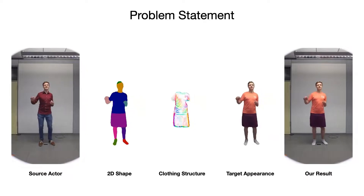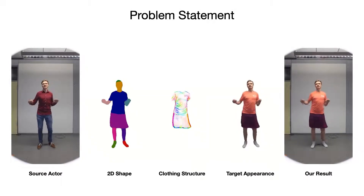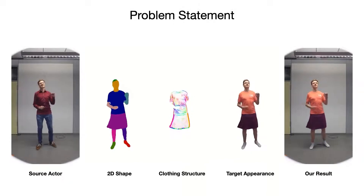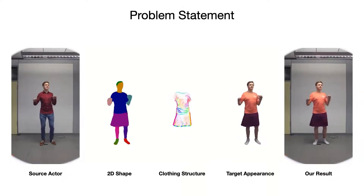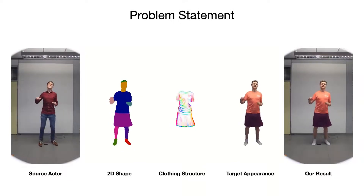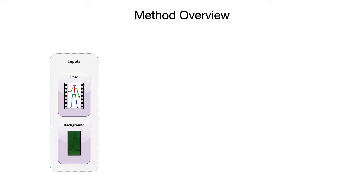To handle the target actor's clothing in a coherent way, we explicitly estimate the actor's shape, internal clothing structure, and resulting appearance under a given source input pose. Given a 2D representation of a source motion sequence and a static background image, our method synthesizes the target actor's appearance for the provided poses.